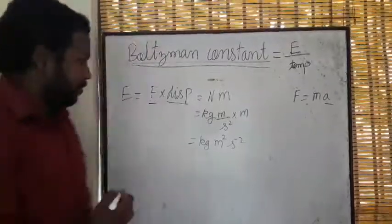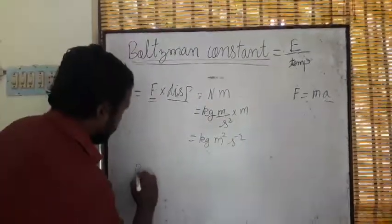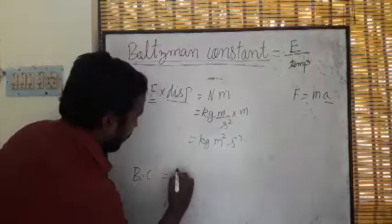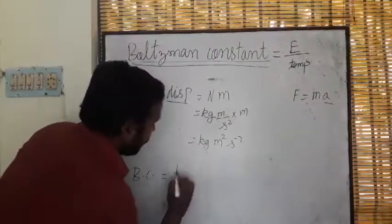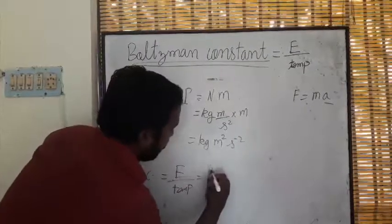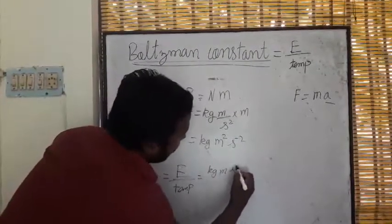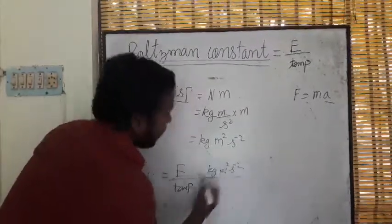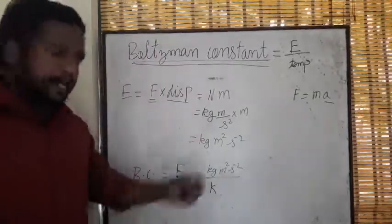So Boltzmann constant is energy per unit temperature. Energy is kg meter second minus 2, and the temperature is Kelvin.